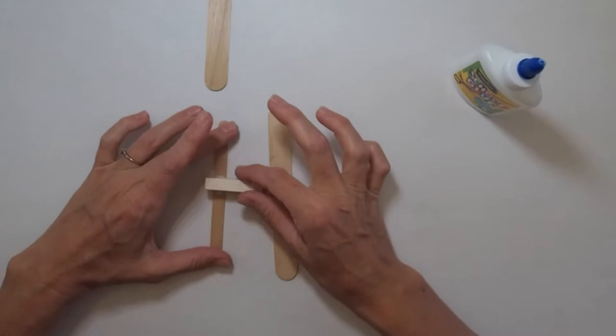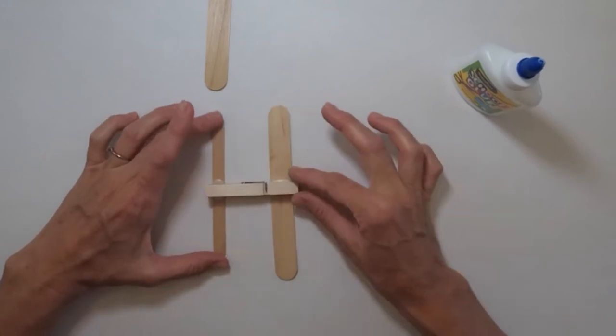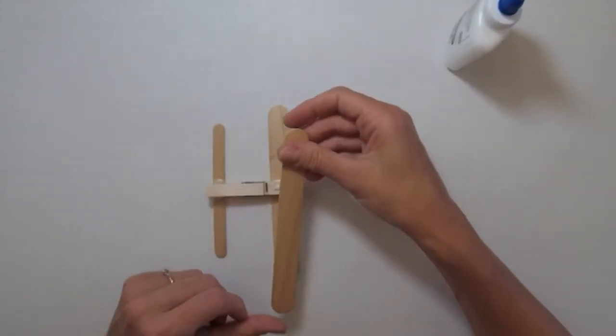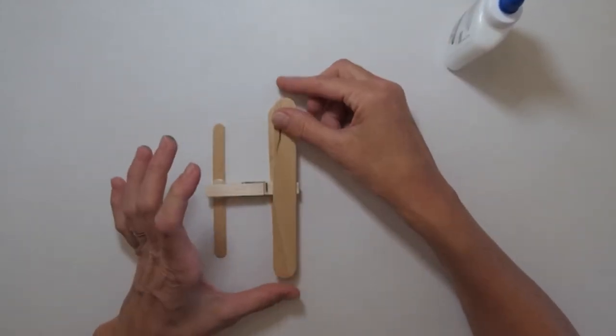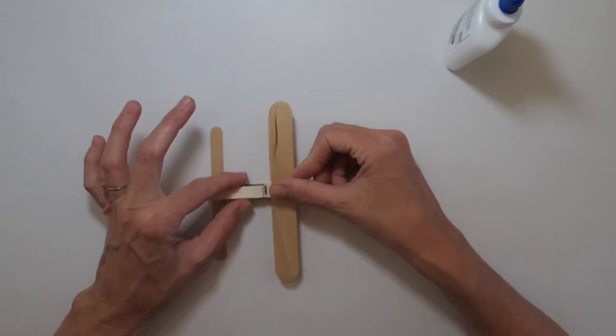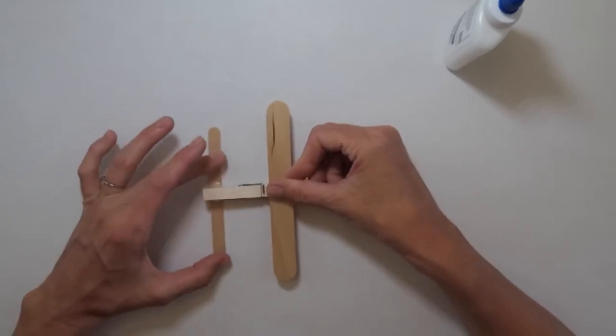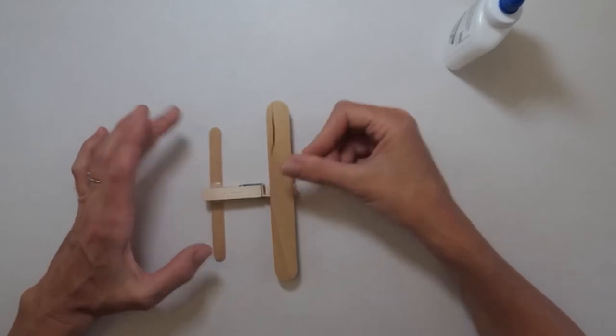And then do the same thing with your second large tongue depressor popsicle stick. Glue it right there, make sure they line up. And that's all there is to it.